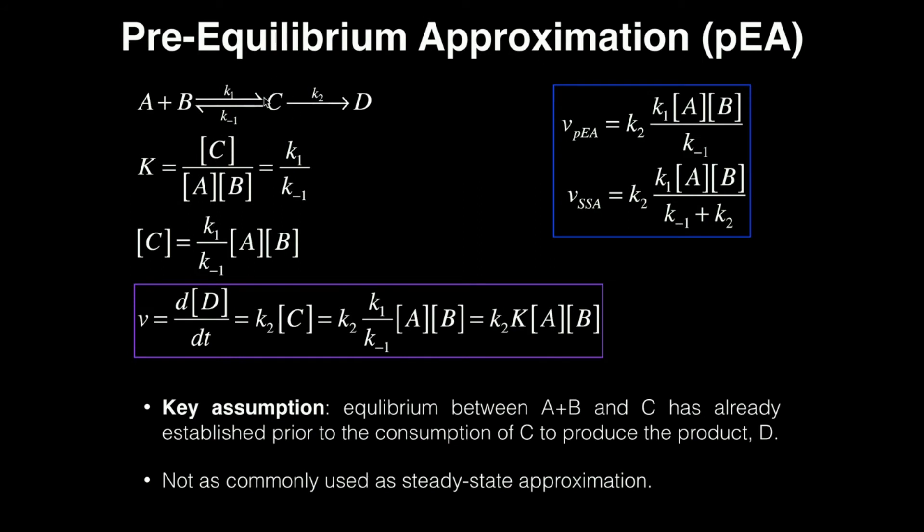We want to find what our intermediate is, which is going to be C, and that's because C is both consumed by K2 and formed by K1. So that makes C an intermediate.